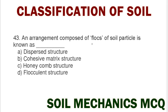Next question: an arrangement of composite flocs of soil particles is known as option A dispersive structure, option B coaggressive matrix structure, option C honeycomb structure, option D flocculent structure. The correct answer is option D flocculent structure.